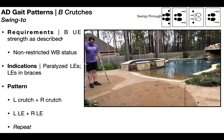The major patient population that's going to be utilizing these gait patterns is those in the neurological setting. Two indications here are those with paralyzed lower extremities — for example, those with a spinal cord injury — and also those with lower extremities in braces, like KFOs or HKAFOs.